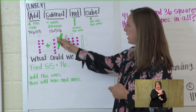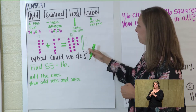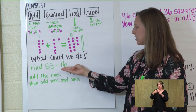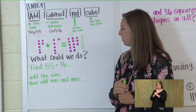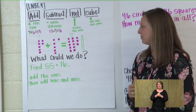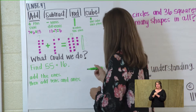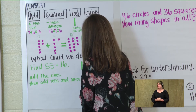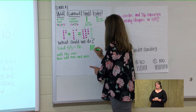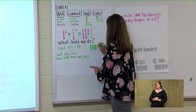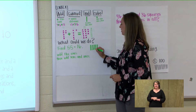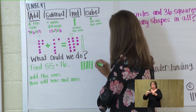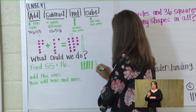7 plus 6 equals the sum 13. Let's try this one: find 55 plus 16. I'll give you a second to draw it out. So for 55, I have 5 rods and 5 cubes. 1, 2, 3, 4, 5.